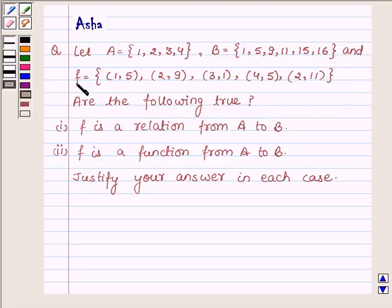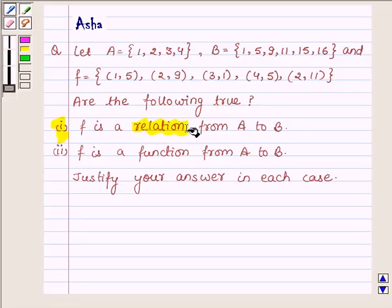and F be a set having elements (1,5), (2,9), (3,1), (4,5), (2,11). Are the following true? First is F is a relation from A to B and second is F is a function from A to B. Justify your answer in each case.